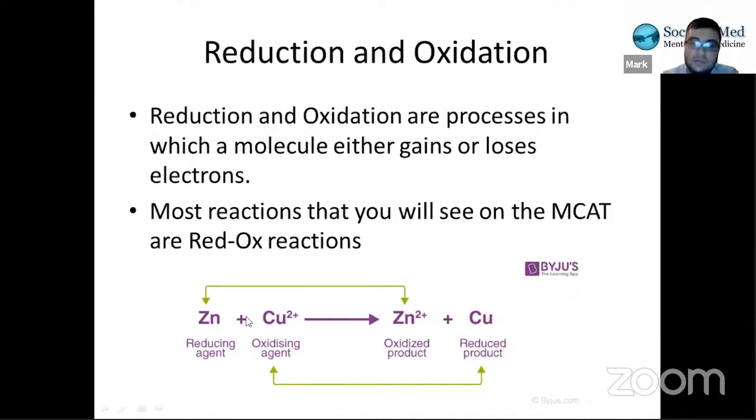If you look at this example here on the bottom, it's zinc plus copper two plus reacts to make zinc two plus and copper. If you notice in the start, zinc, ignore the words on the bottom, we'll cover that in a bit, but zinc at the start has a charge of neutral, zero, because it's in an atomic state. And at the end of the reaction, it has a charge of two plus. David mentioned OIL RIG, we'll be talking about that in a second, the mnemonic.